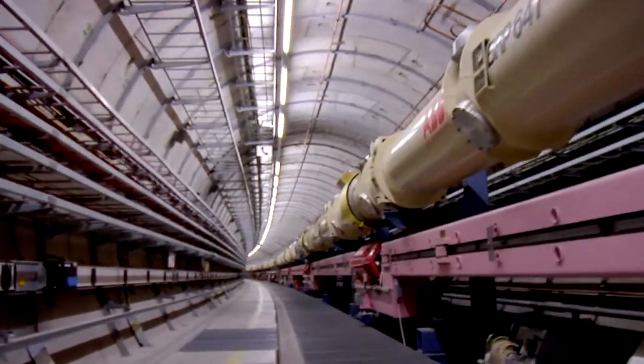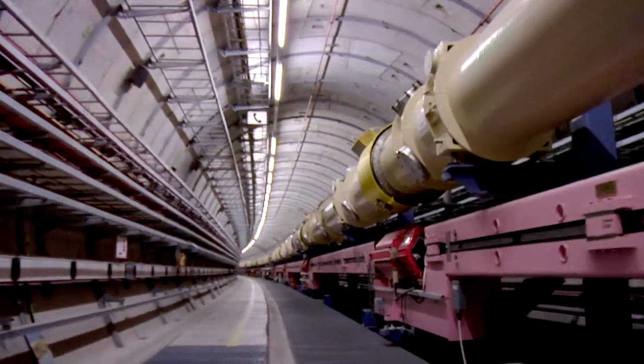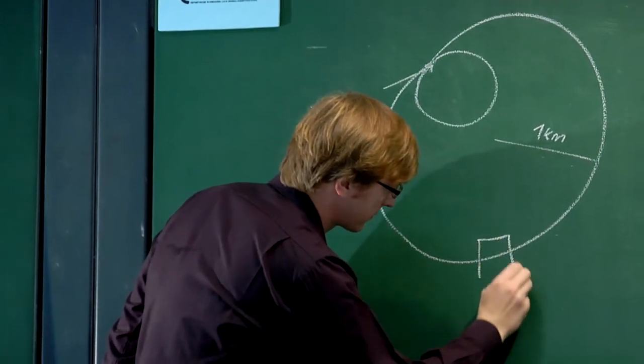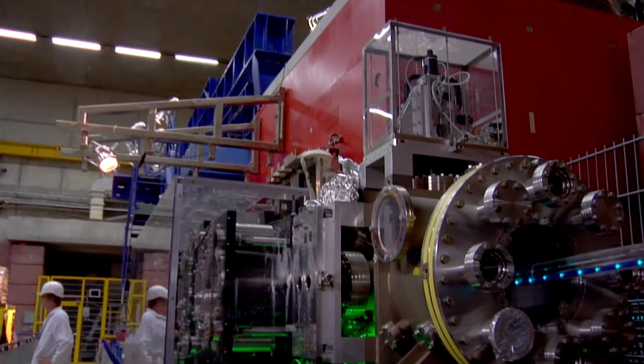The main accelerator is a ring with a radius of one kilometer. Now, at one point in the ring, which we call the interaction point, there's our experiment. It's called S-log.